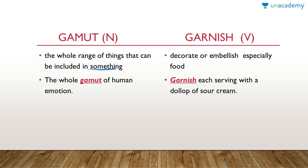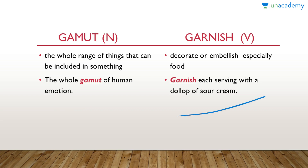Gamut is a noun, which means the whole range of things that can be included in something. In a sentence: 'The whole gamut of human emotion.' Next: garnish is a verb, which means to decorate or embellish, especially food. In a sentence: 'Garnish each serving with a dollop of sour cream.'